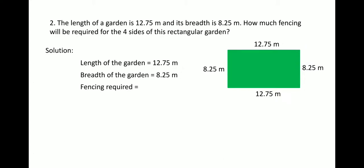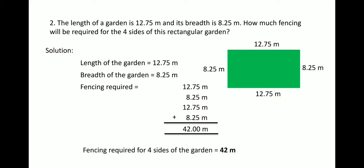Therefore the fencing required will be equal to we will add all these 4 different sides that is 12.75 plus 8.25 again 12.75 and 8.25 and thus we add it. So when we add we will get the result as 42.00 meters. So the fencing required for 4 sides of the garden is equal to 42.00 meters.